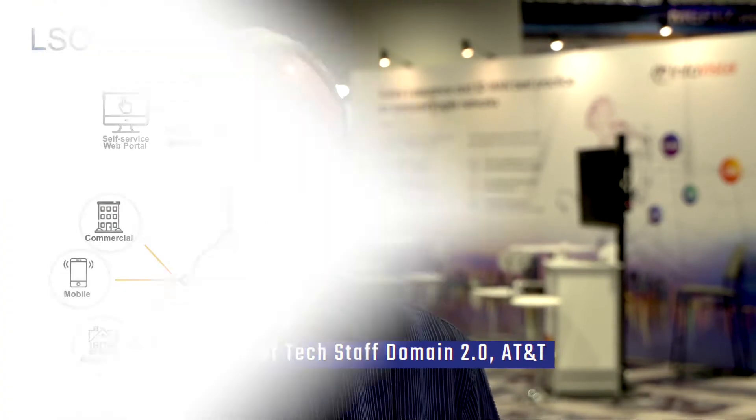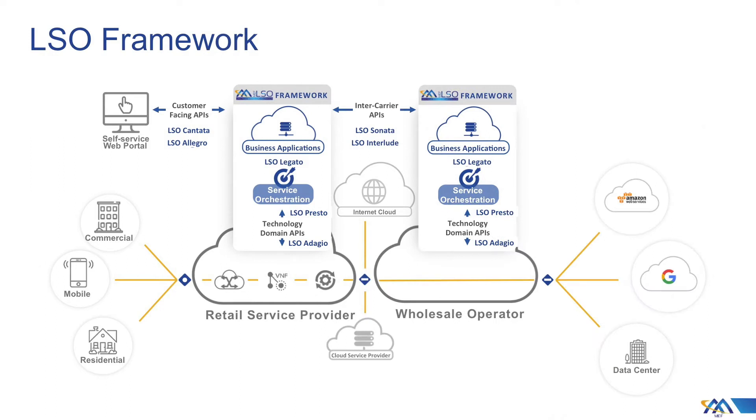LSO APIs are really the key to interoperability across the whole LSO platform. They allow for cross-domain interactions from the customer to the service provider, and interactions from the service provider to its partner domains. To enable end-to-end service orchestration, we need to have all those different types of east-west interactions in place, particularly with partner providers, because it really extends the footprint and reach of the service provider into areas where they might not have reachability.